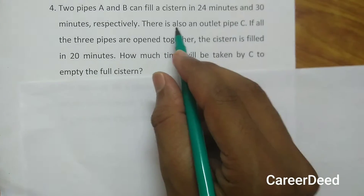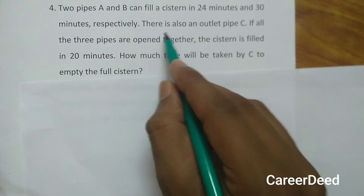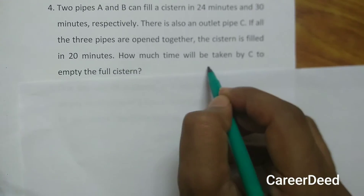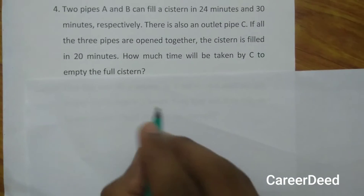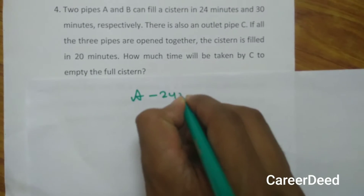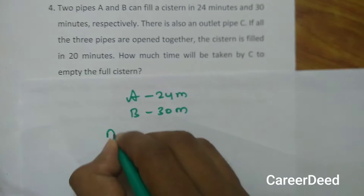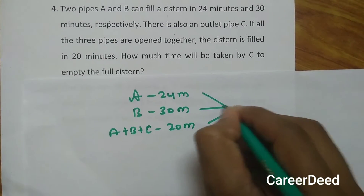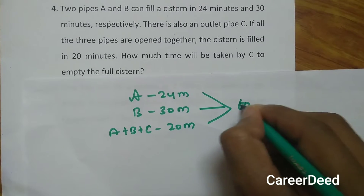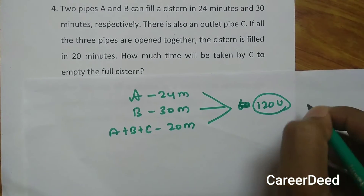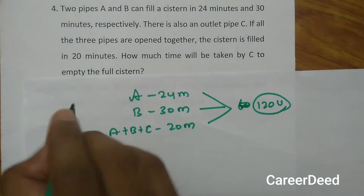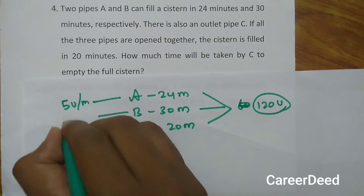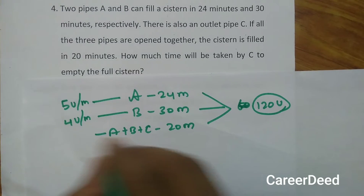Question number 4: two pipes A and B can fill a cistern in 24 minutes and 30 minutes respectively. There is also an outlet pipe C. If all three pipes are opened together, the cistern is filled in 20 minutes. How long will pipe C alone take to empty the full cistern? Taking the LCM of 24, 30 and 20 gives 120 units as the total capacity. Pipe A fills 120 ÷ 24 = 5 units per minute, pipe B fills 4 units per minute, and together A, B and C fill 120 ÷ 20 = 6 units per minute.